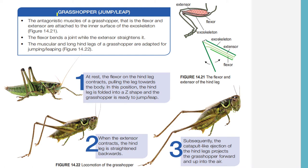In this video we are going to discuss the locomotion of grasshoppers. They also have antagonistic muscles — the flexor and extensor — which are attached to the inner surface of the exoskeleton. The exoskeleton is the type of skeleton possessed by the grasshopper, an outer skeleton. The flexor and extensor are attached to the inner surface of this exoskeleton.